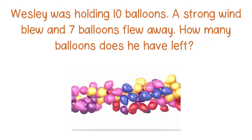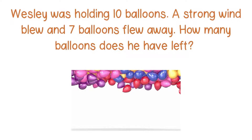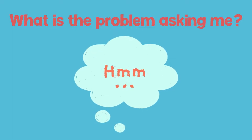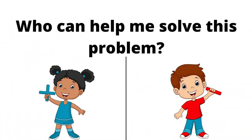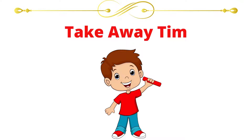Here's our next problem. Wesley was holding ten balloons. A strong wind blew and seven balloons flew away. How many balloons does he have left? I want you to take a moment to think about what we need to figure out and practice saying it in a sentence. If you said something like we need to figure out how many balloons are left if you start with ten and take away seven, then you are correct. Takeaway Tim will help us remember to start with ten and subtract seven. Take a moment to draw a picture to model the problem.